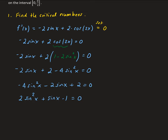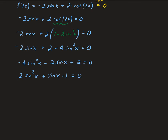This is a trig equation we can solve using substitution. We let y = sin(x), giving us 2y² + y - 1 = 0. We can factor this as (2y - 1)(y + 1) = 0.